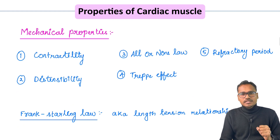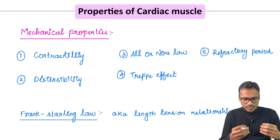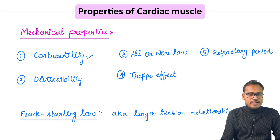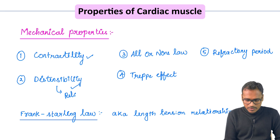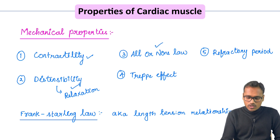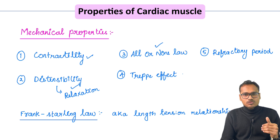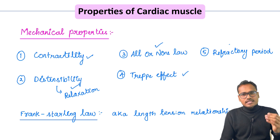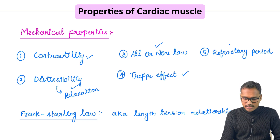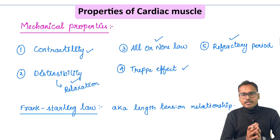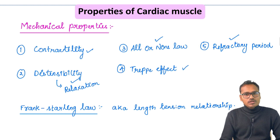Coming to the mechanical properties — what mechanical functions does the heart perform? It has contractility, meaning it can contract during systole, and distensibility, which is the relaxation property during diastole. It also obeys the all-or-none law, similar to skeletal muscle fibers. There is an effect called the treppe effect, seen in amphibian experiments. And it has a huge refractory period — whenever a second stimulus is given, the heart does not respond to it.